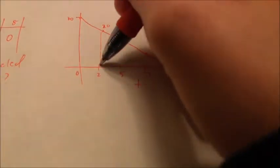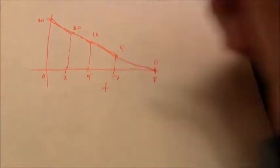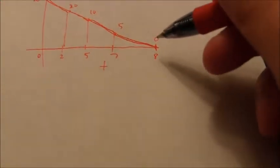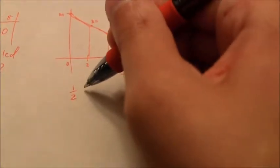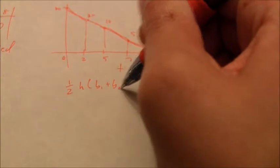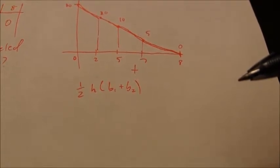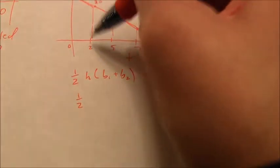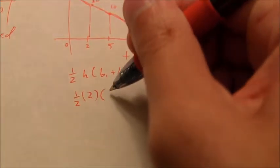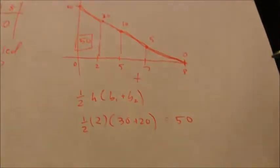We identify four trapezoids from the graph — the last one could be called a triangle, but the trapezoid area formula still works. For the first trapezoid, we have bases of 30 and 20 and a height of 2. Half of 2 is 1, and 30 plus 20 is 50, so that area is 50 square units.